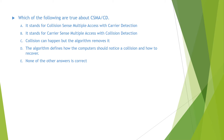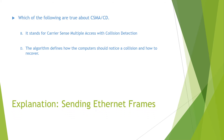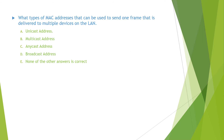CSMA/CD stands for Carrier Sense Multiple Access with Collision Detection, and the algorithm defines how the computer should notice a collision and how to recover. So the answer is B and D. You can find the detailed explanation for this question in the video on CSMA/CD.